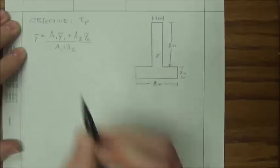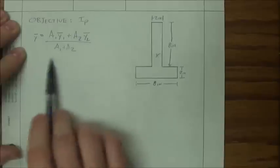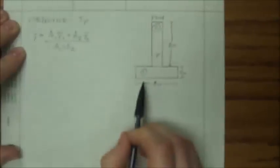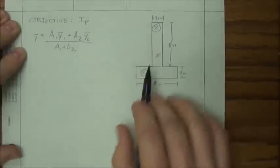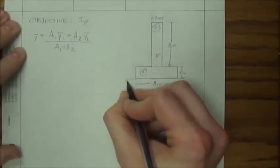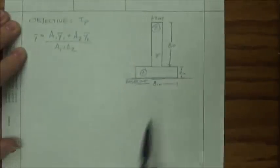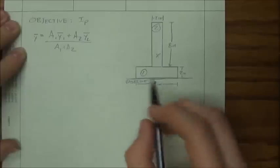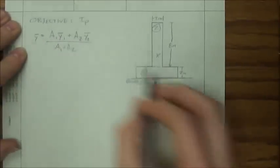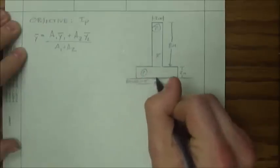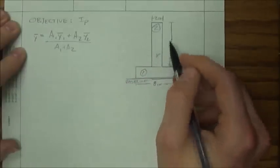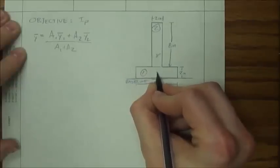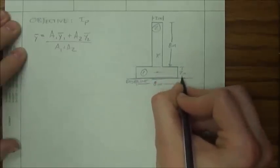The formula looks like this. I have objects labeled 1 and 2. Object 1 is the lower box and object 2 is the upper box. A1 is the area of the lower box and A2 is the area of the upper box. The Y-bars are measured from a baseline at the bottom — just so we know what we're measuring from. Y1-bar and Y2-bar represent the distance from the baseline to the centroid of each object. For a rectangle, that's just halfway through, so Y1-bar is 1 inch.